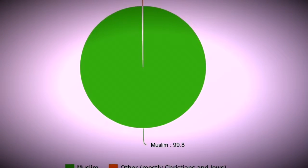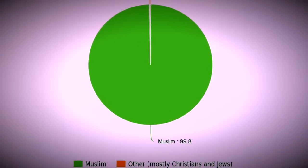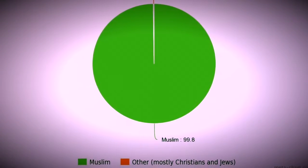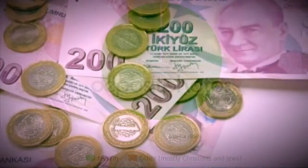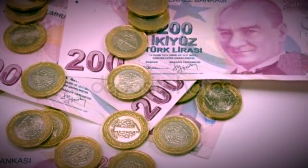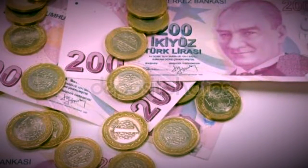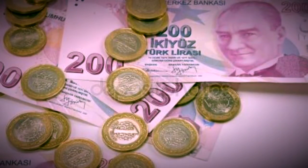This graph shows that 99.8% of Turkish people are Muslim and 0.2% are Christians.